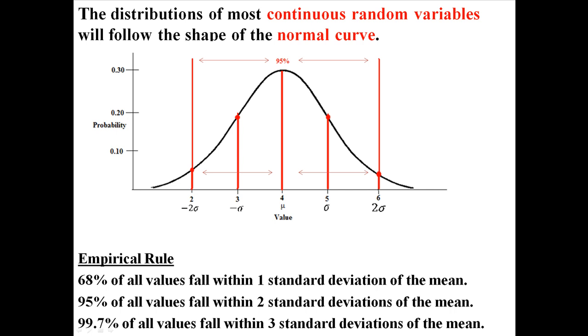So almost all the values will always be within three standard deviations of the mean. If something is outside of that, it'd be a very rare event, because it's very unlikely for something to be outside of three standard deviations.